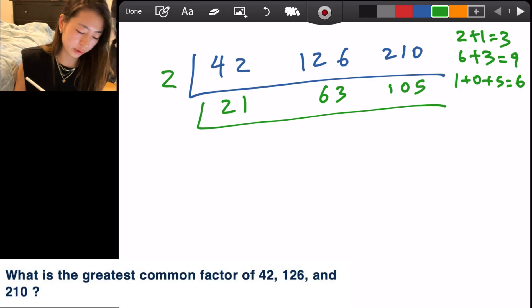That's why now I write a 3 on the left side and I divide. So we get 7, 21, and then 35. Now it's easy to see that we actually have another common factor, which is 7. So I repeat the same process, write a 7 on the left.